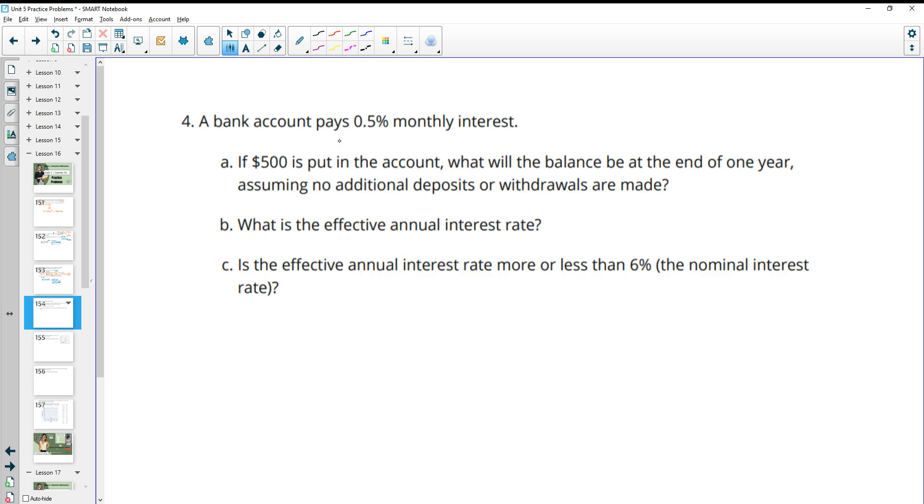Number four, a bank account pays 0.5% monthly interest. Pays means it's going up, right? They're giving us that money, not taking it away. So if we have $500 put into an account, what will the balance be at the end of one year? Now remember there's that mismatch again of monthly versus year. So this one year, remember, is 12 months. So we want to make sure that those match, assuming that no additional deposits or withdrawals were made.